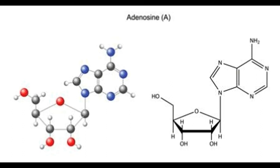Adenine binds to thymine in DNA and uracil molecules in RNA with the help of two hydrogen bonds, thereby helping in stabilizing the nucleic acid structure. It was previously included in the group of B-complex vitamins, however it is now excluded as it is not a true vitamin. However, it forms conjugates with other vitamins like niacin and folic acid to form cofactors and coenzymes that regulate metabolic pathways.